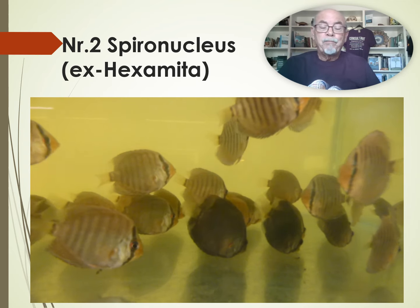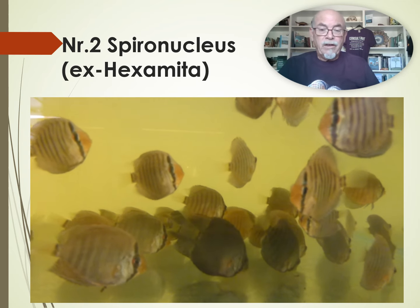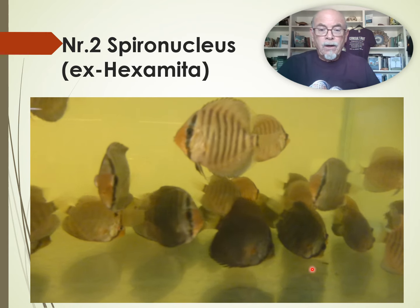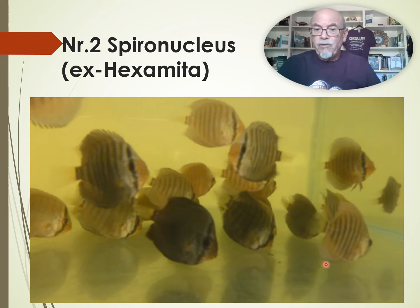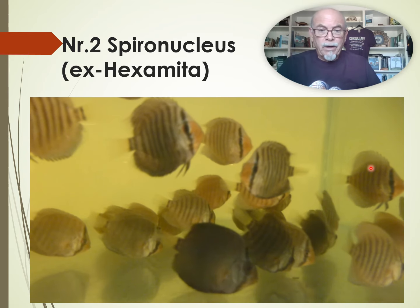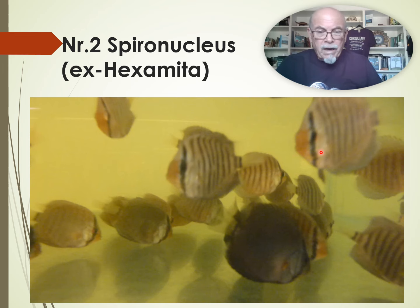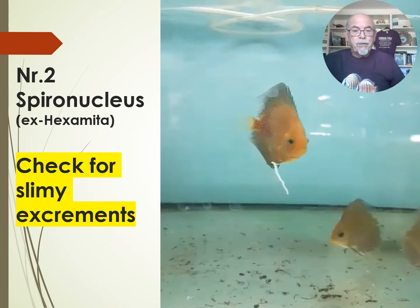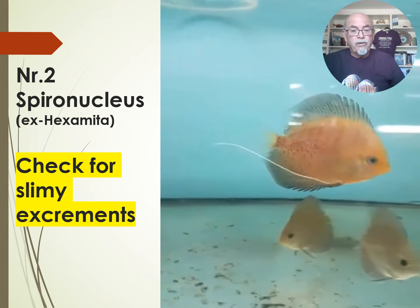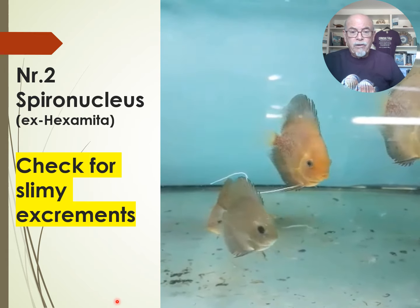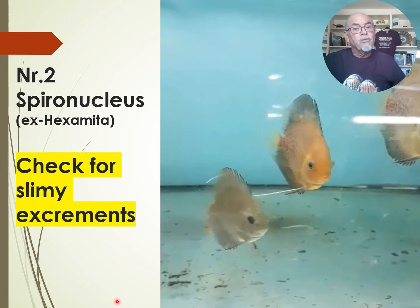Number two: spironucleus, used to be called hexamita. You can see these dark discus here at the bottom slowly wasting away — it can take months. The other ones, some may have clamped fins. They might look okay, but they all might have that parasite. That parasite is inside the fish causing excessive mucus. You can see it hanging out as a string from the discus, because that discus was suffering from hexamita, spironucleus.